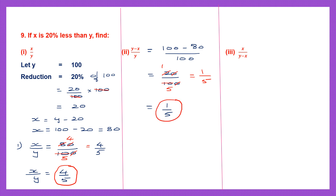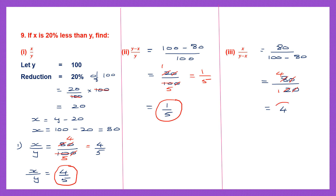The third question is x by (y minus x). x is 80, y is 100, and x is 80. So we have 80 in the numerator and 100 minus 80 equals 20 in the denominator. Cancelling 20 and 80: 2 ones are 2 and 2 fours are 8, so the answer is 4. The answer to the third question is 4.